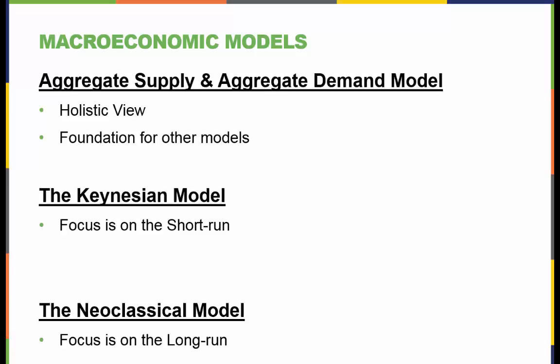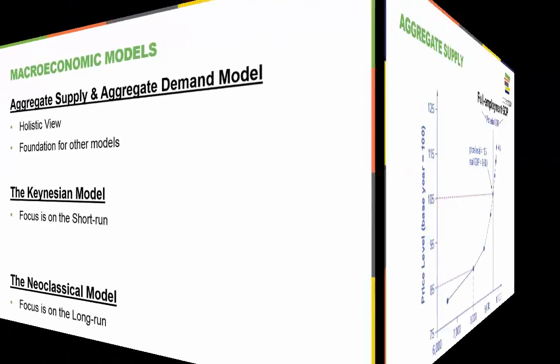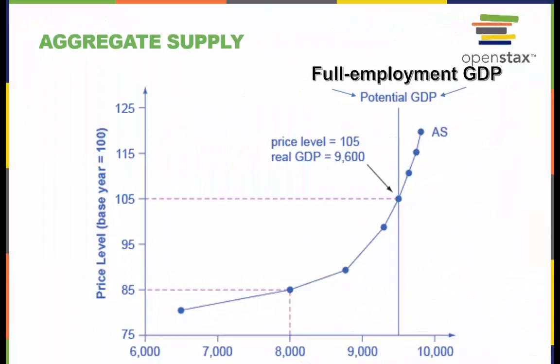The neoclassical model deals with the opposite view and focuses more on the long-run impacts that shifts in aggregate supply and aggregate demand make on the economy. Let us look first at aggregate supply and aggregate demand separately, and then we will see how they interact together.